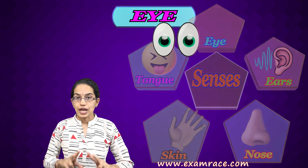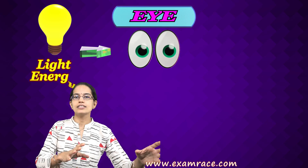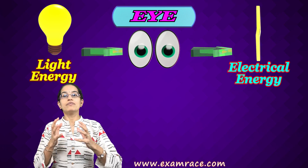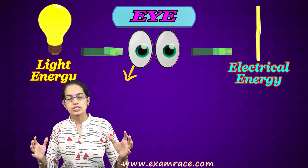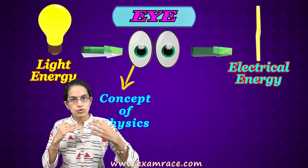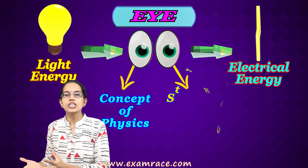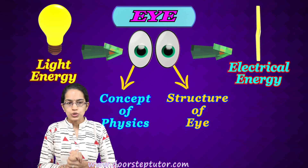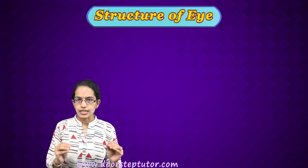Now if we talk about the eye, what it actually does is it converts the light energy into electrical energy, and the whole process can be divided into two sections. One is the concept of physics where we understand the concept of light and the properties of light, and the second is the structure of the eye and how it is similar to a pinhole camera. So today we would be talking about the structure of the eye in detail.